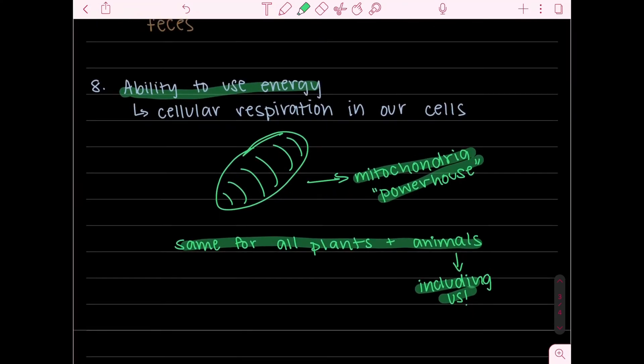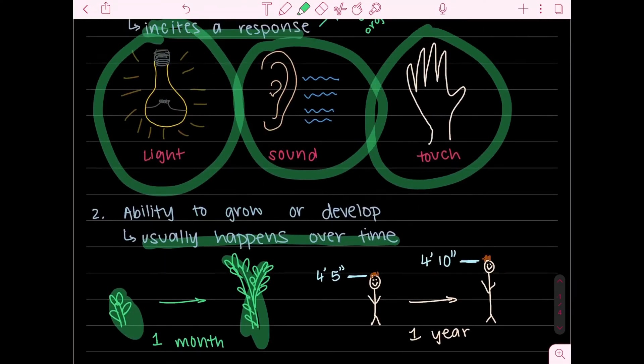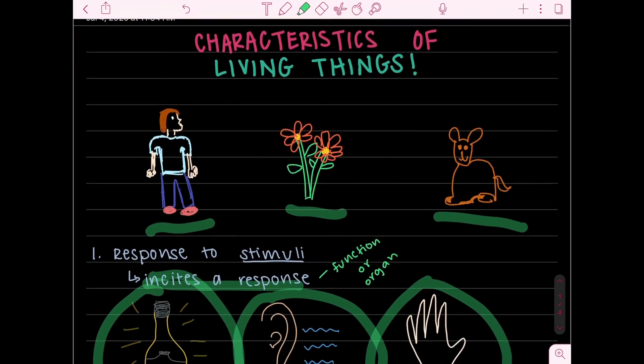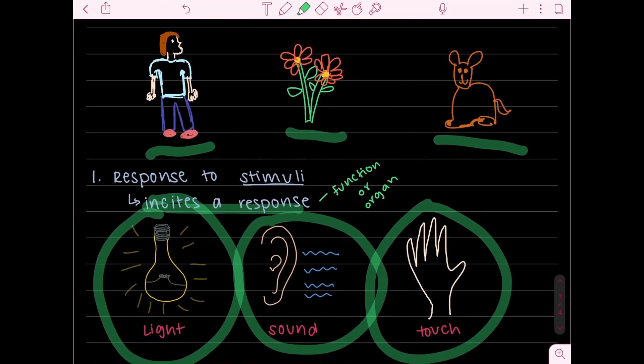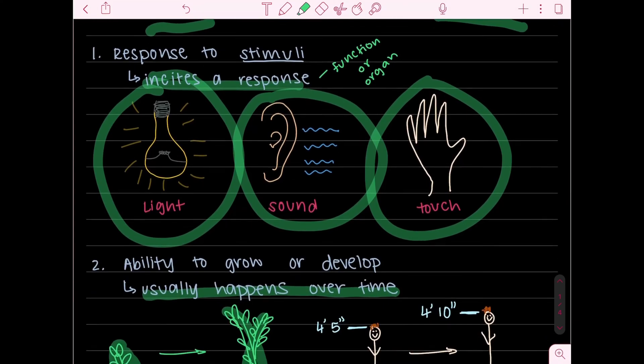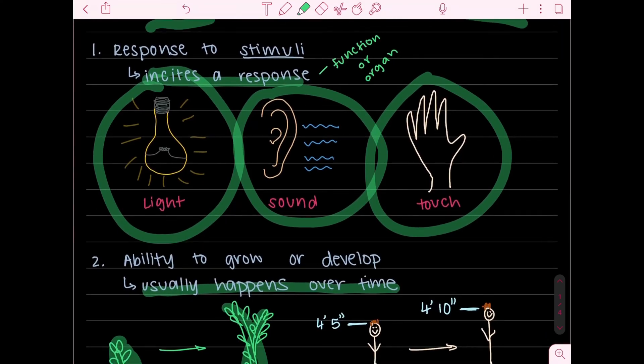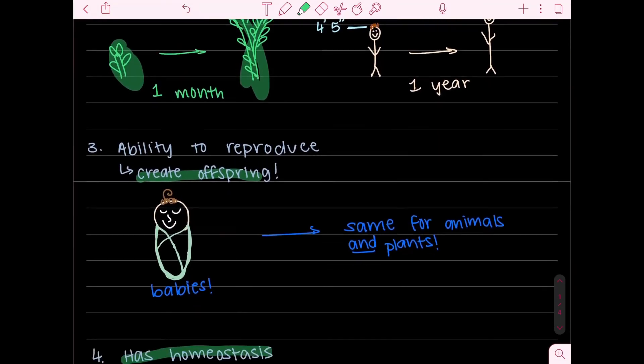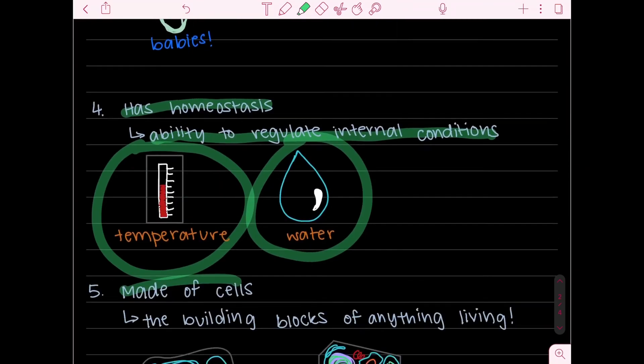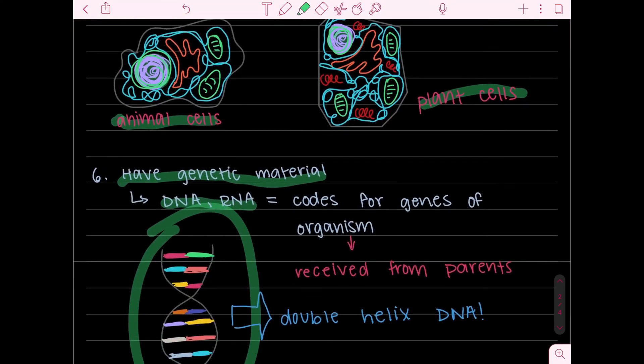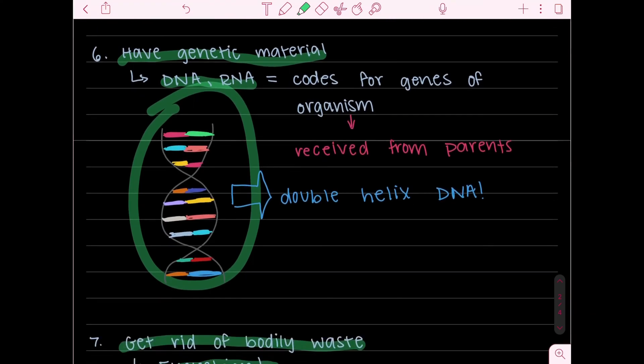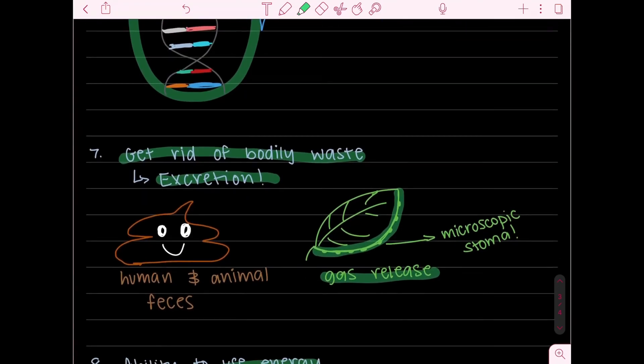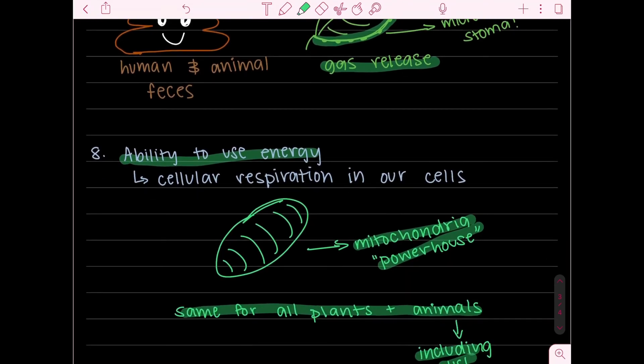And since that was the last characteristic I'll briefly go over what we talked about today. So we started out at the top, we defined that living things can range from a number of living organisms such as humans, plants, and animals. We defined all the characteristics of a living thing for example the response to stimuli, the ability to grow or develop, the ability to reproduce, homeostasis, made of cells, has genetic material, able to get rid of bodily waste, and the ability to use energy.